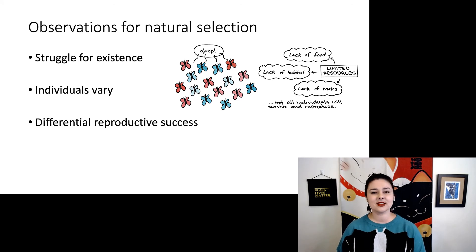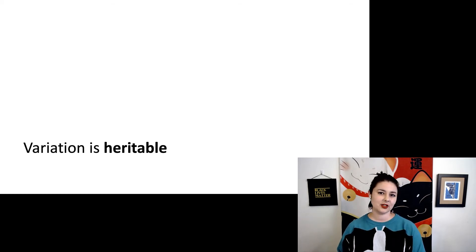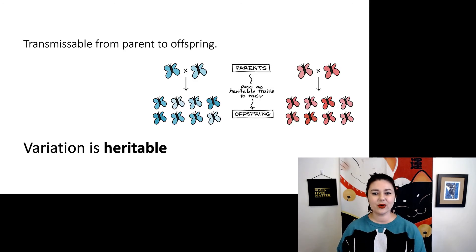Next, not everybody has the same number of children. The fancy words we like to use are differential reproductive success. Reproductive success refers to how many children you have, and differential just means different individuals have different numbers of children. Another important thing when we're talking about this is that variation is heritable. This just means that it's transmissible from parent to offspring, or that really the children are going to look like the parents. Most people look like their parents to at least some degree, and most people look like their siblings quite a lot. So in this example, blue butterflies are going to have blue children, and red butterflies are going to have red children.